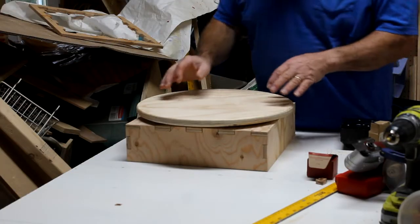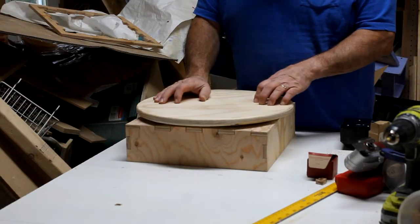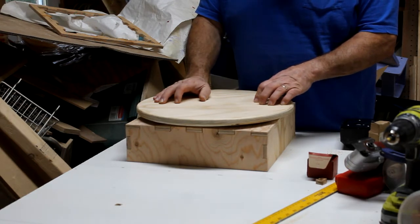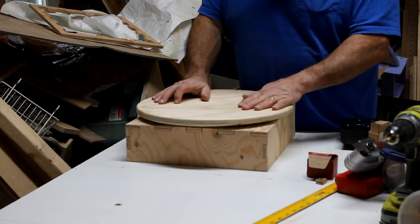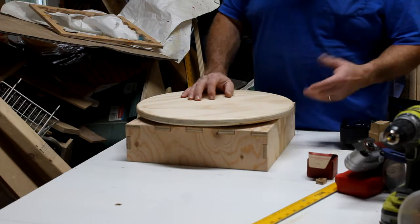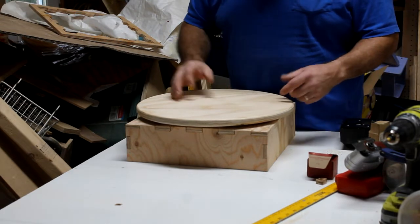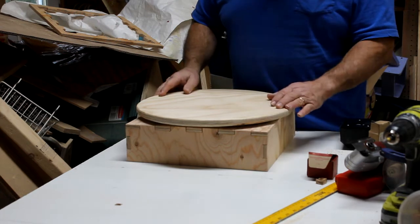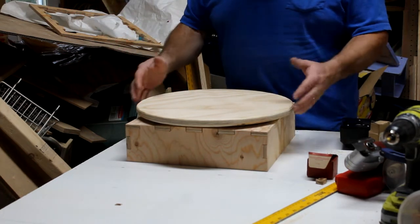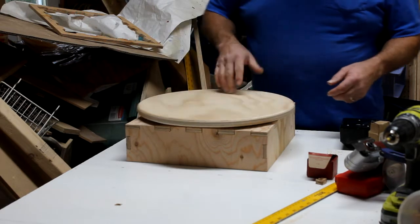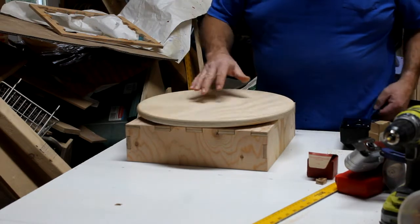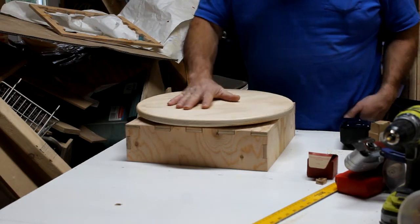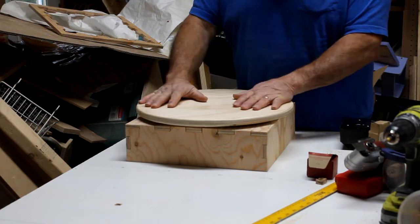At this point, I have the lazy susan installed. I have my box, I have my turntable. Now, ordinarily, I would make the turntable a little bit larger diameter to cover these corners, but I just didn't have a piece of plywood large enough, so that's why it's a little bit smaller. The lazy susan is attached, and that's fine, but we want this to be powered.